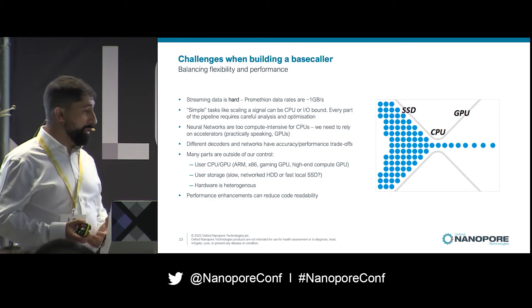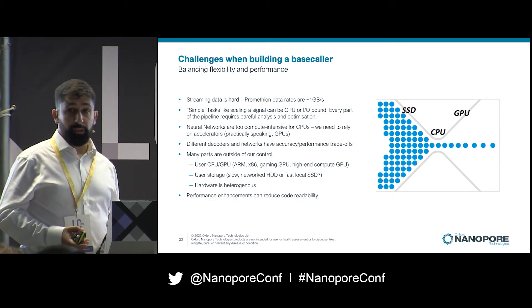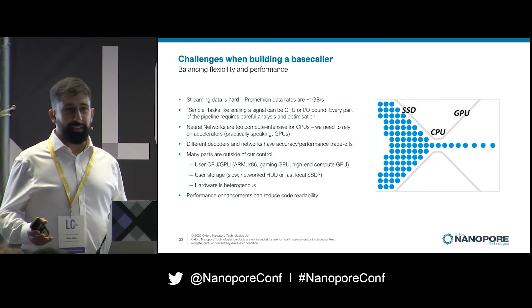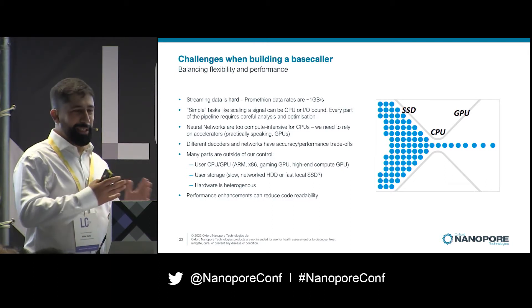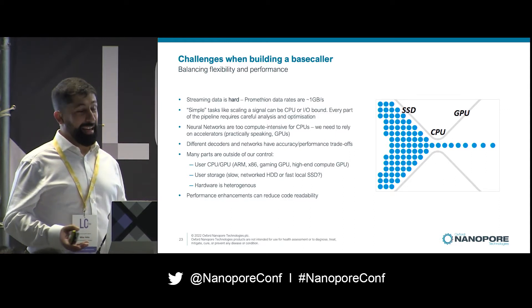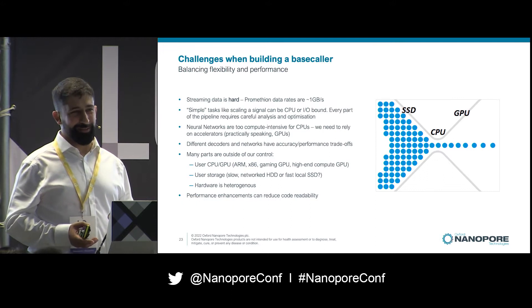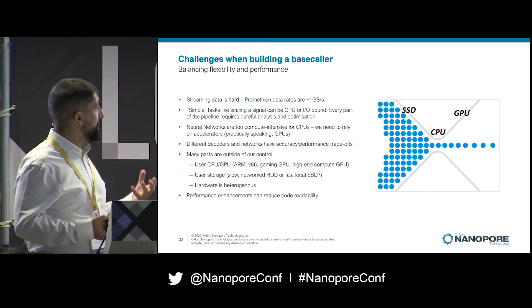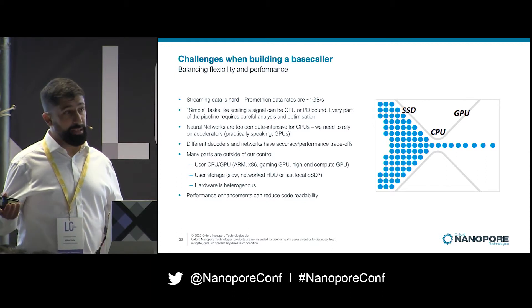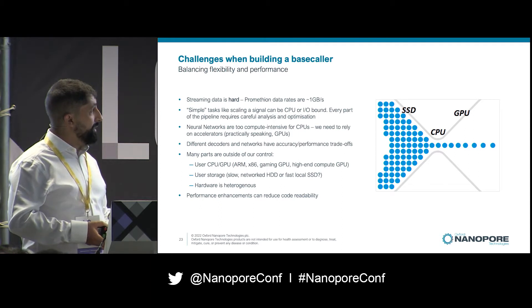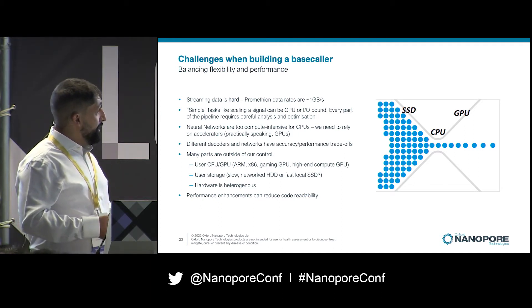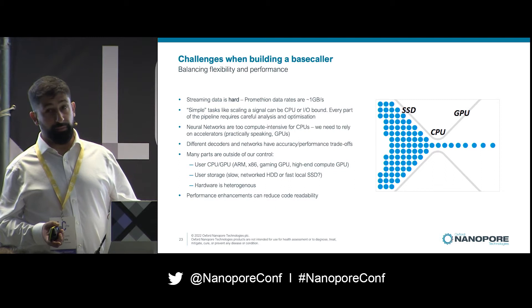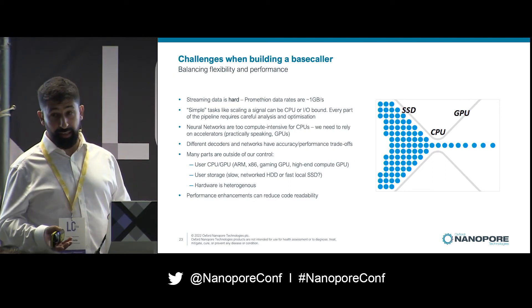What kind of challenges are we talking about? Streaming data is hard, for a start. A PromethION sequencer outputs raw data at a rate of around one gigabyte a second. Anything you do at a gigabyte a second is hard — even just reading and writing to disk is not trivial, and we want to do a lot more than that. Tasks you might think of as simple, like scaling a signal — really just multiplying an integer by a floating-point number — can be CPU or I/O-bound quite easily. Neural networks are way too compute-intensive for CPUs, which means we need to deploy those on GPUs. That adds heterogeneity and an extra layer of complexity to the system.